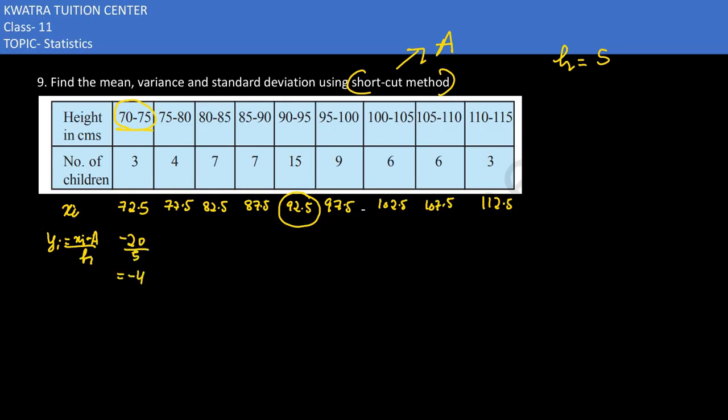So y_i would get minus 4. Then 77.5 minus 92.5 gives you minus 15 divided by 5, which is minus 3. 82.5 minus 92.5 gives minus 10, so you get minus 2. Next is minus 1, then 0, then 1, then 2, then 3, then 4.